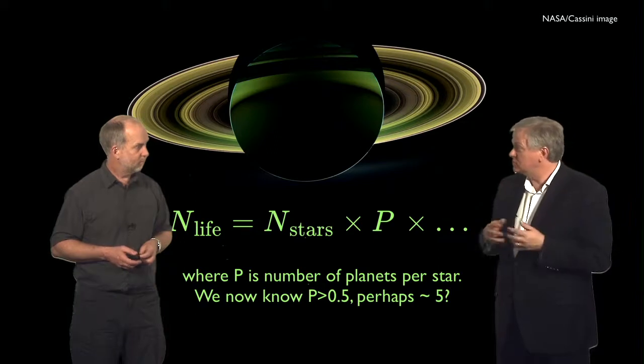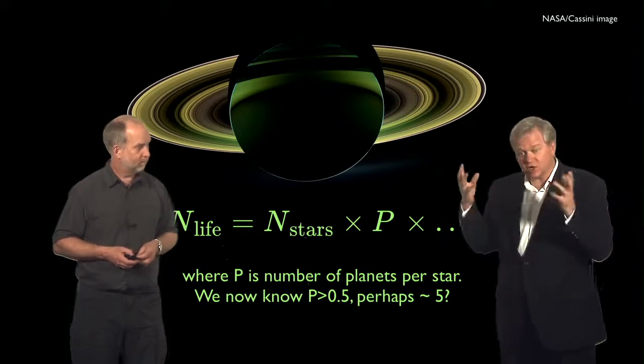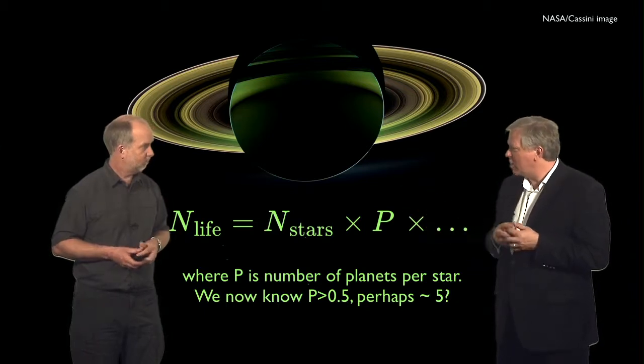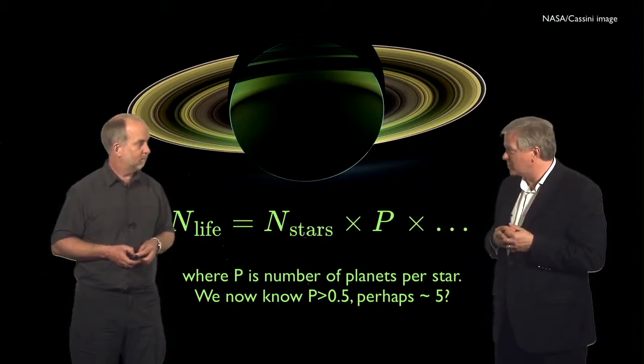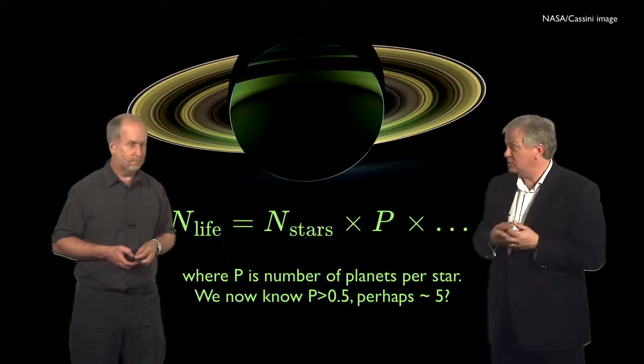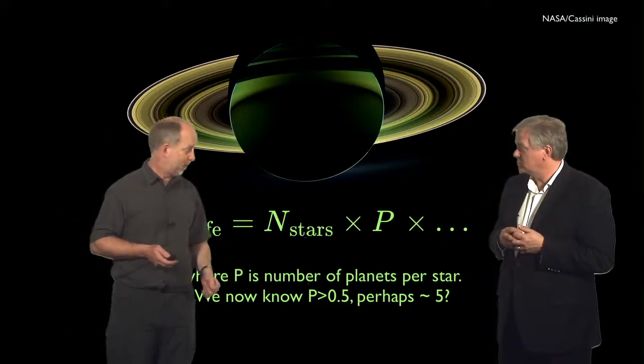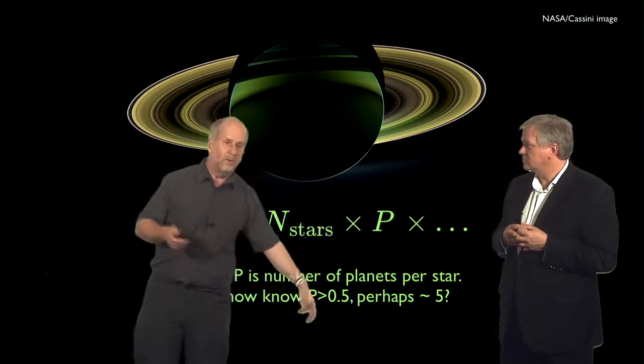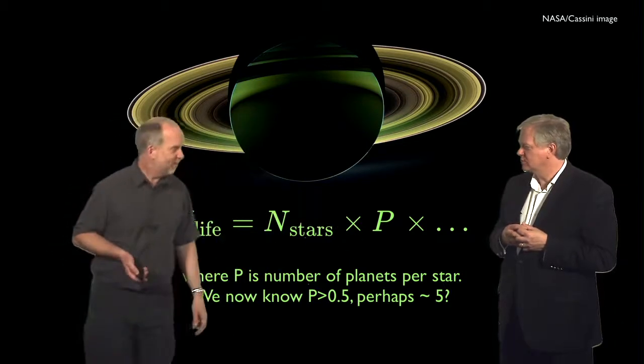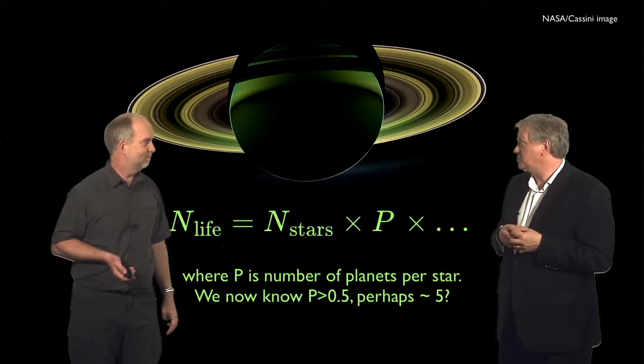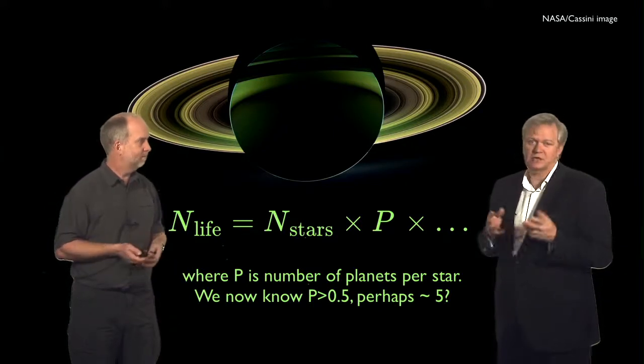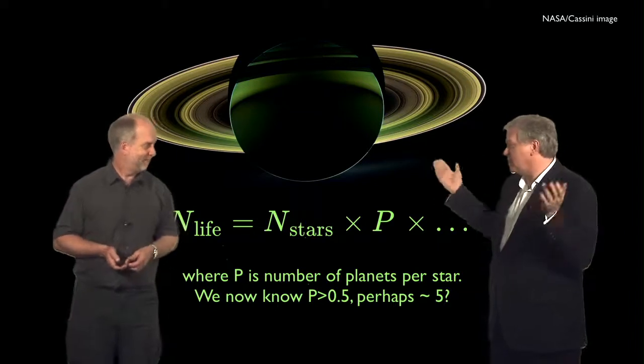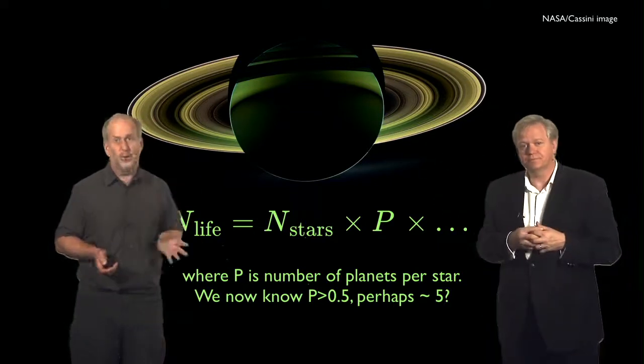And we know that from recent surveys of nearby stars with, for example, the Kepler mission, which is a NASA satellite that goes out and looks for planets, that the average star has a planet around it. And that's something that we didn't know ten years ago. In fact, probably several planets around it. So we know this number is at least a half, and probably one, two, five, ten, something like that. But to a factor of ten, we know the number, which doesn't sound great, but since we didn't know what it was at all ten years ago, that's a big improvement. So there are going to be lots of planets out there.